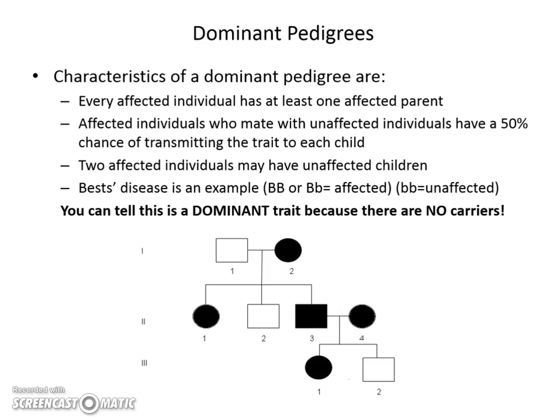Let's talk about dominant pedigrees. Dominant pedigrees are a little different because you only need one capital letter or one dominant allele to show the gene. In this case, we're looking at the letter B representing Best disease. Best disease is a dominant disease that causes the eye to deteriorate — it's macular degeneration and can cause blindness before the age of 15. If one of your parents has this disease, there's a really good chance that you'll inherit the trait.